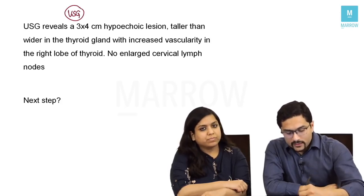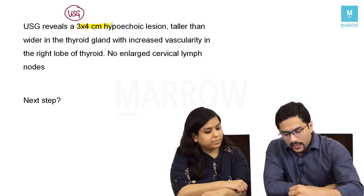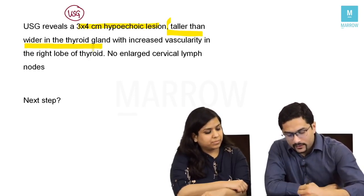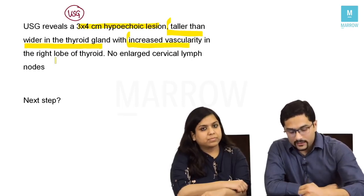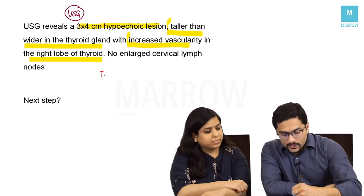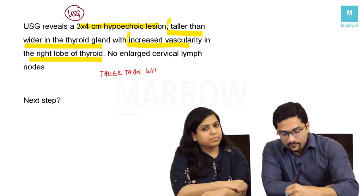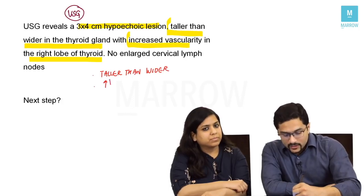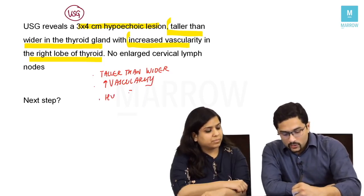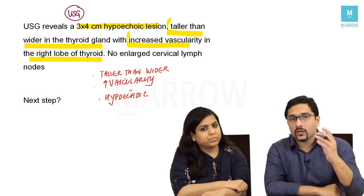The ultrasound reveals a 3 x 4 centimeter hypoechoic lesion which is taller than wider, with increased vascularity in the gland. No enlarged lymph nodes are seen. A lesion that is taller than wider is suggestive of malignancy, and increased vascularity is also a sign seen in malignant lesions of the thyroid. A hypoechoic lesion — these are the ultrasound features suggestive of a malignant lesion.